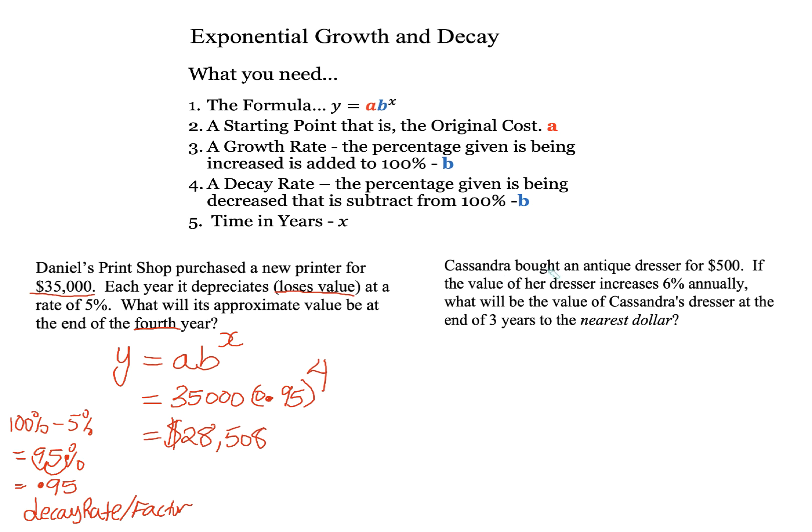Cassandra bought an antique dresser for $500. If the value of her dresser increases 6% annually, what will be the value of Cassandra's dresser at the end of three years to the nearest dollar? I'm going to write my formula. Y equals A B raised to the X. Okay. What's my starting point? I'm starting with $500. So I have $500.